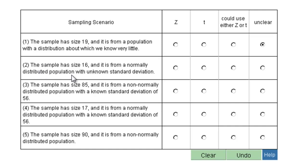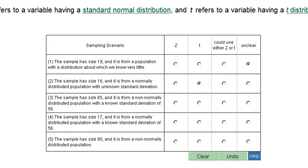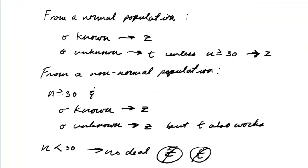This one says it has a sample size of 16, and it is from a normally distributed population with an unknown standard deviation. We're looking in the normal category, but sigma is unknown. So that is T. Remember: from a normal population, if sigma is unknown, it's T — unless the sample size is greater than or equal to 30.